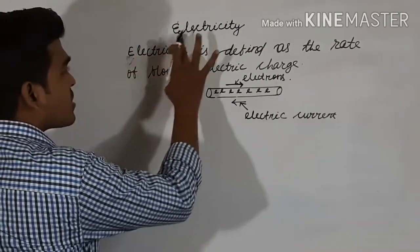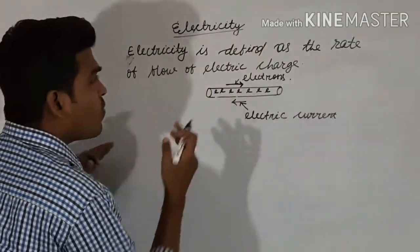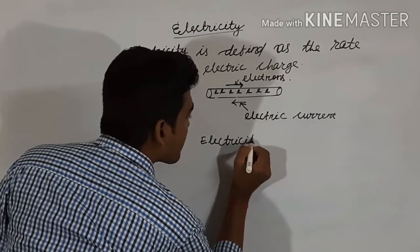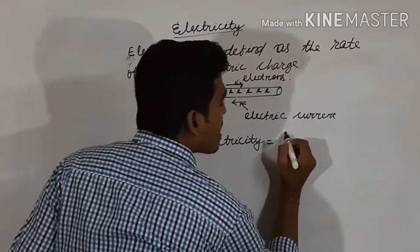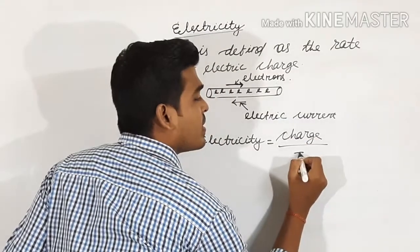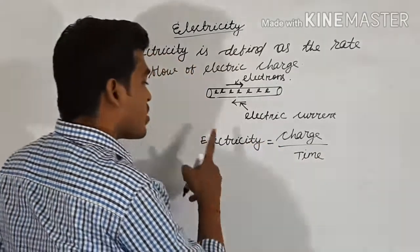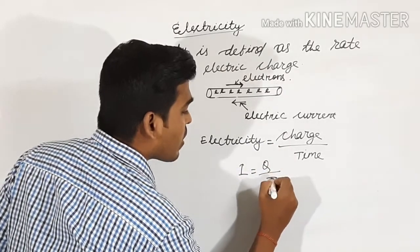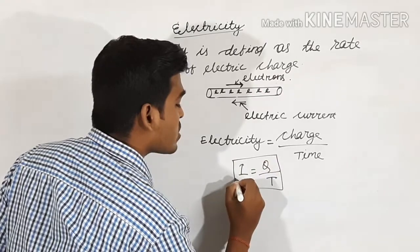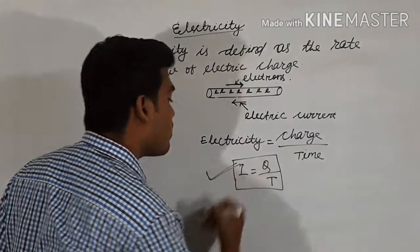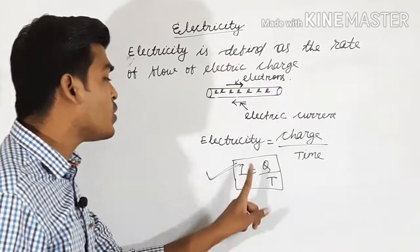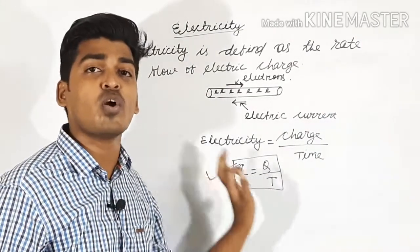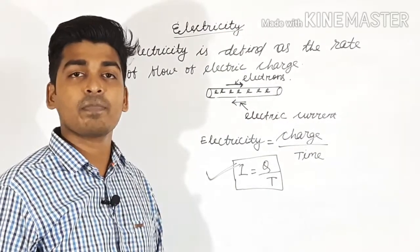Now I will write the formula. Electricity equals charge divided by time. The symbol for electricity is I, the symbol for charge is Q, and the symbol for time is T. So I equals Q divided by T. You must memorize this important formula, as we will use it when solving numerical problems.